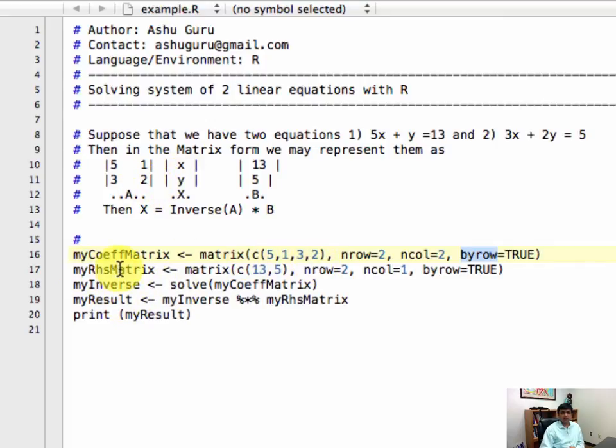Similarly, I define my right-hand side matrix as a collection of 13 and 5, with 2 rows and 1 column, and I'm loading it by row.